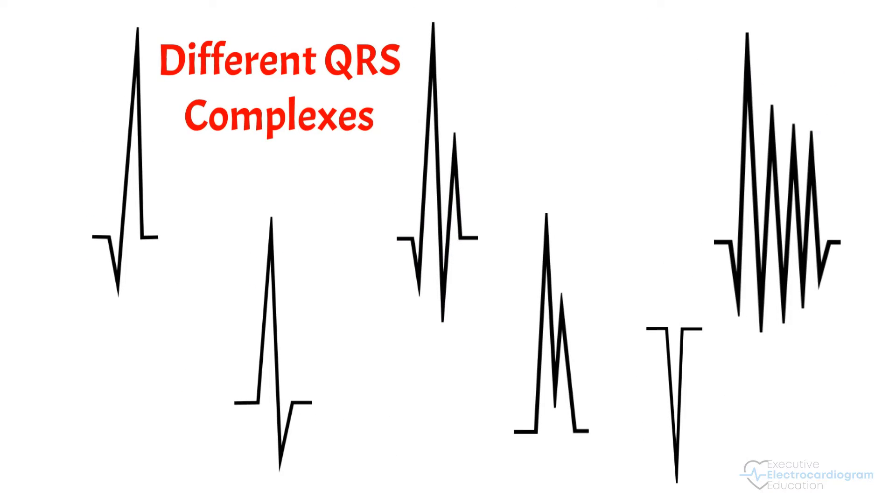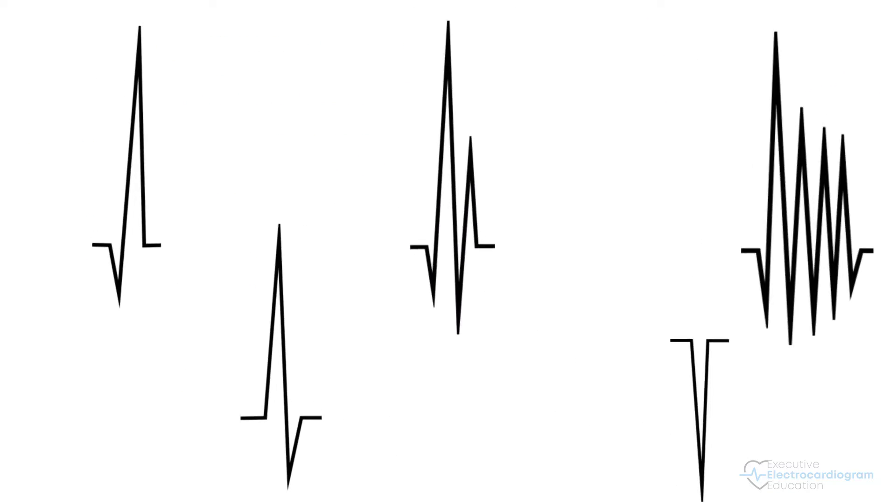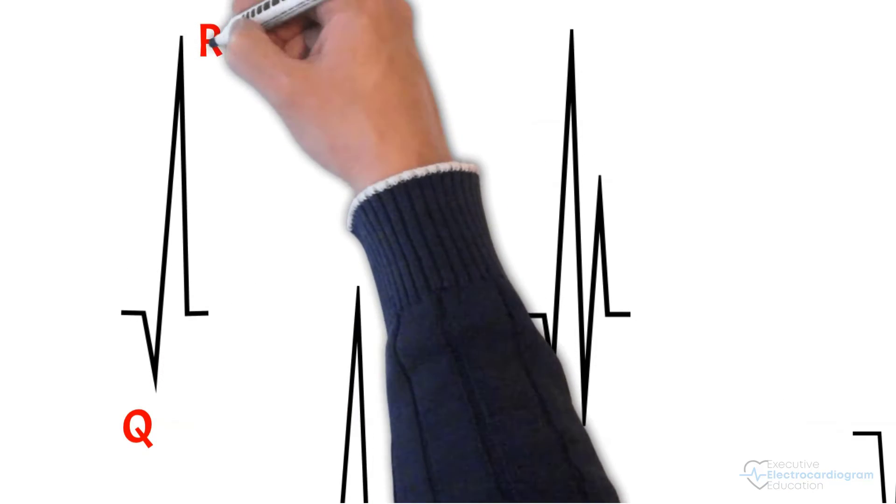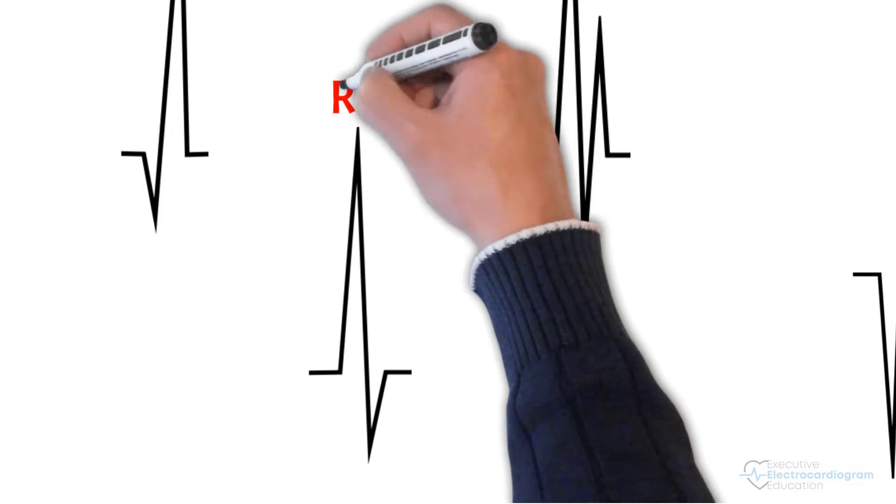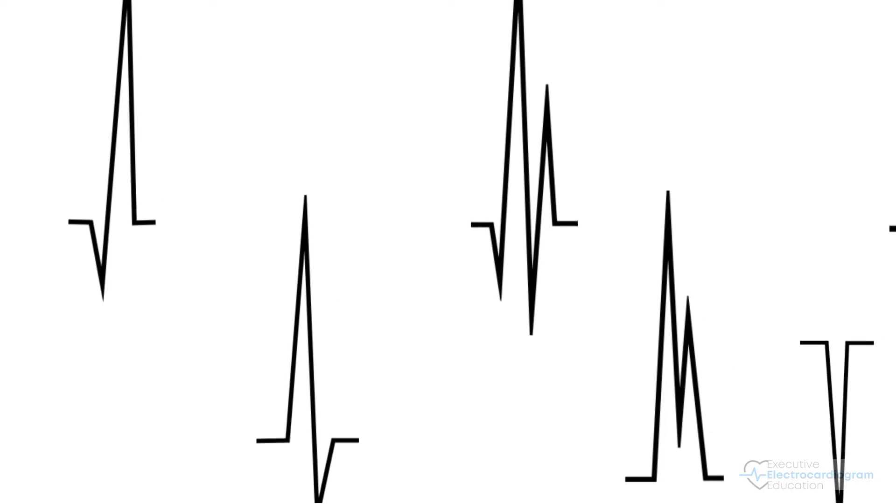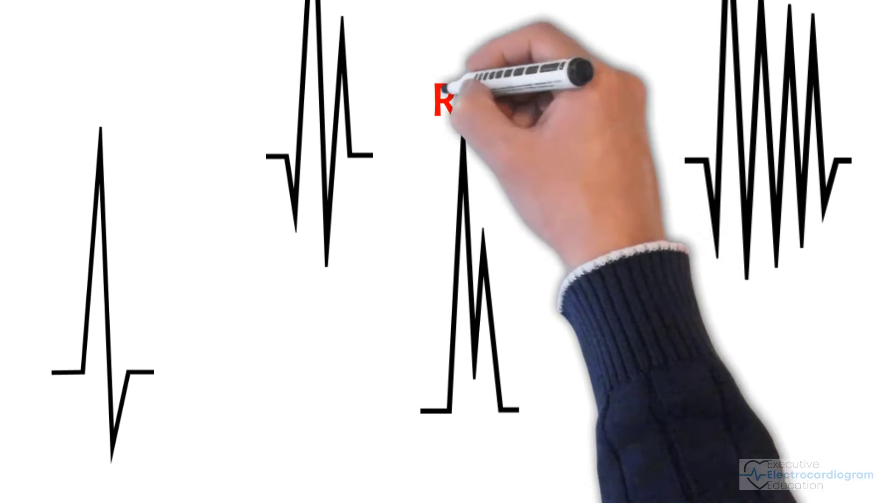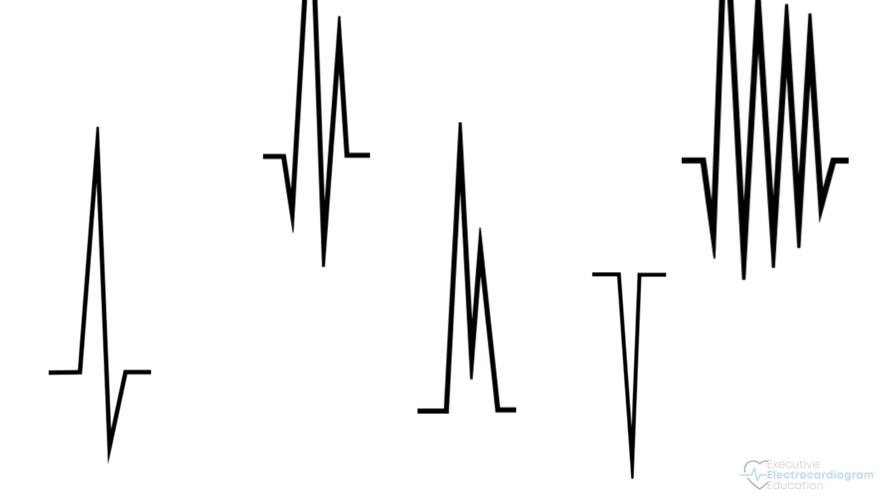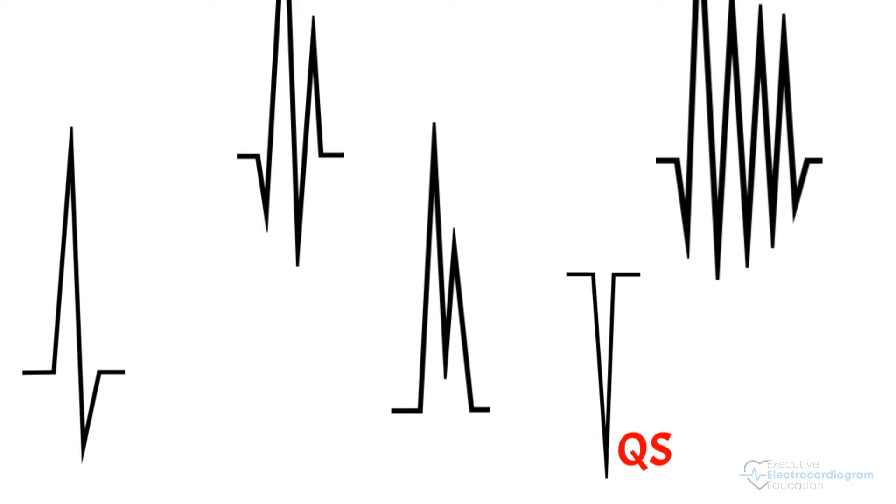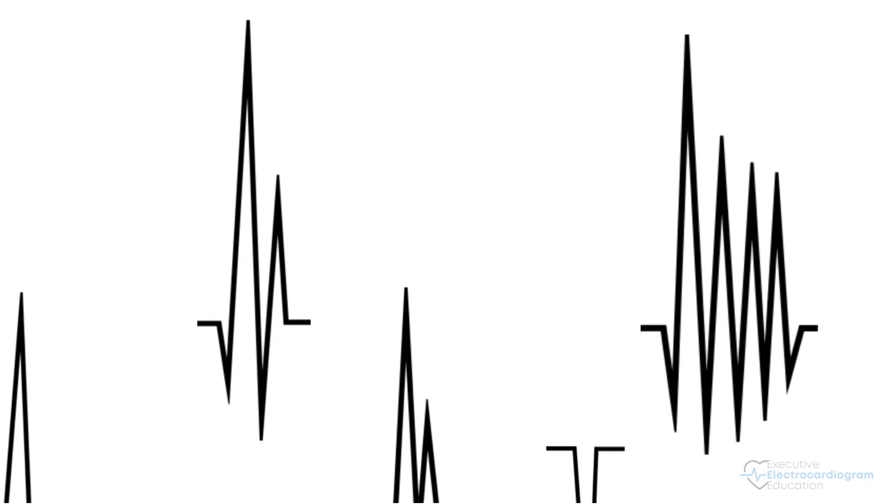Let's look at these QRS complexes and name the waves. Here is a Q wave followed by an R wave. Here is an R wave followed by an S wave. Here is a Q wave, an R wave, an S wave, and an R prime. This one shows an R and an R prime. A single downward deflection is called a QS wave.